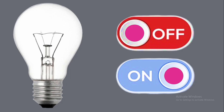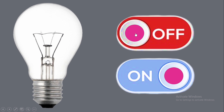In this video, we will learn how to make bulb animation in PowerPoint. The bulb turns on as soon as you click the on button, and the bulb turns off as soon as you click the off button. So, let's start the video.